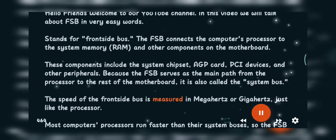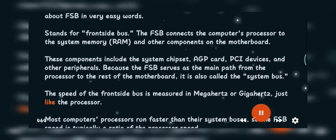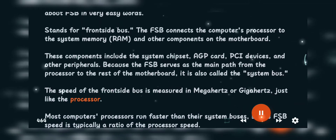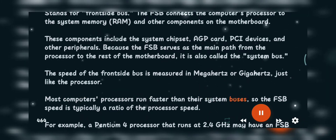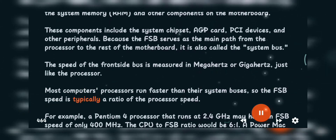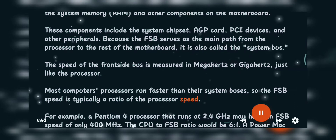The speed of the Front Side Bus is measured in megahertz or gigahertz, just like the processor. Most computer processors run faster than their system buses, so the FSB speed is typically a ratio of the processor speed.